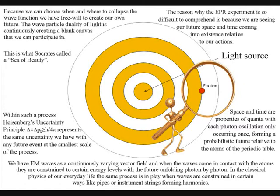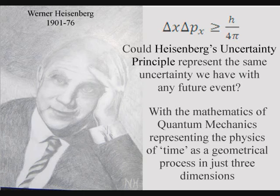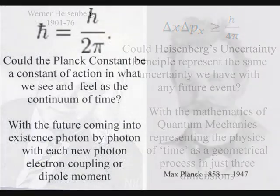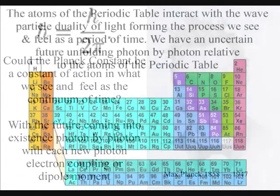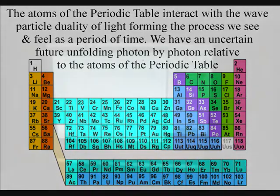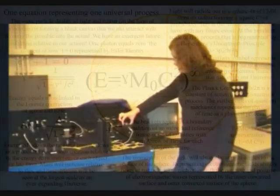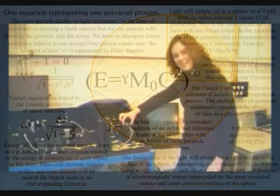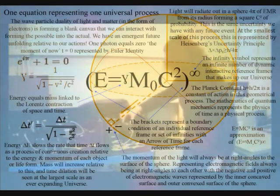Within such a process, Heisenberg's uncertainty principle represents the same uncertainty we have with any future event at the smallest scale of the process, with each photon oscillation only occurring once, forming a probabilistic future relative to the atoms of the periodic table. In this theory, creation is in the hand and eye of the beholder as a process of continuous creation or energy exchange.